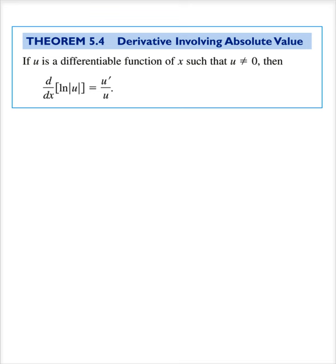Let u be positive. If u is always positive, then it's pretty straightforward that the derivative with respect to x of log of absolute value of u is u prime over u. Because when u is positive, the absolute value of u is equal to u.